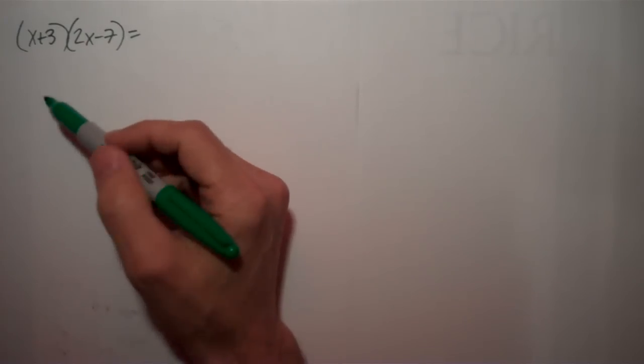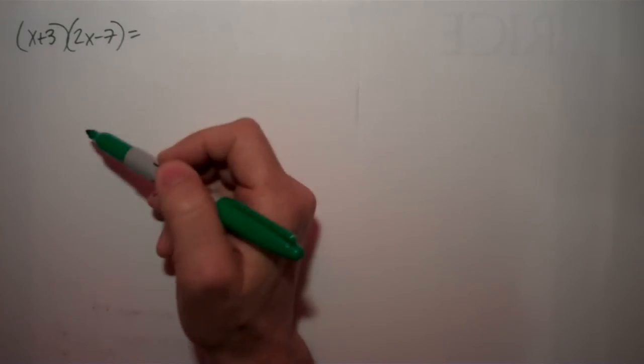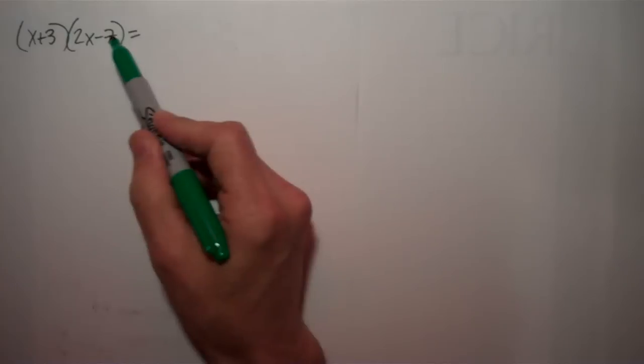So x plus 3 is a binomial, and 2x minus 7 is a binomial. One term, second term.